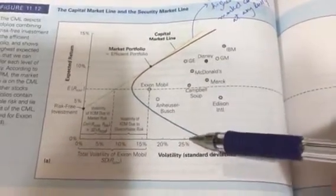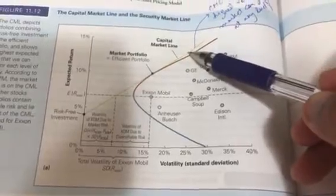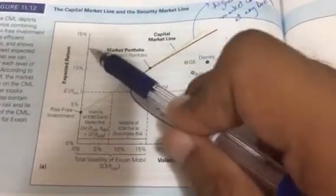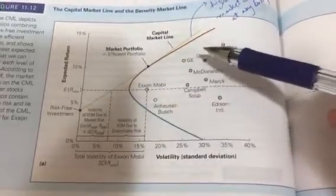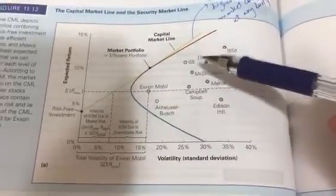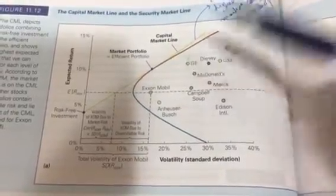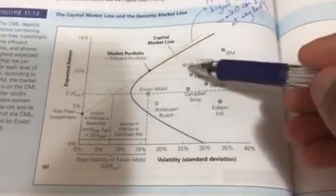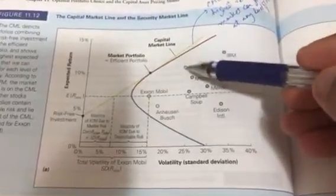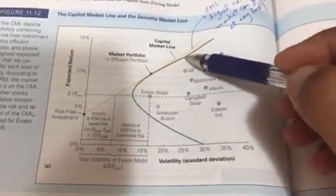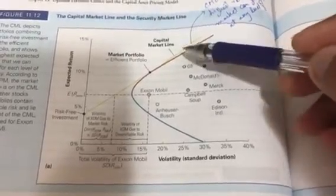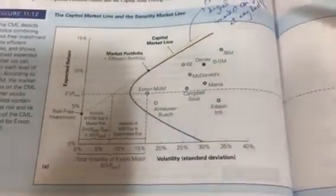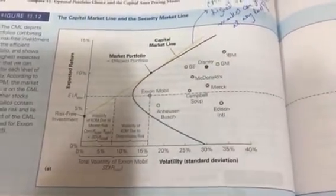At this level of risk, GE can never get a return of say 14% or 14.5%. It can only achieve that higher return if it becomes part of a portfolio — if it's included in the portfolio, only then can it get that return. That's my question, thank you.